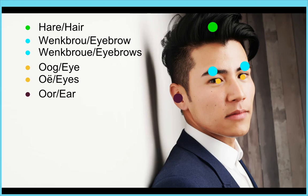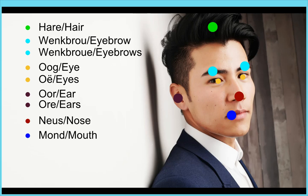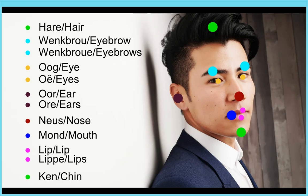And you can't see the other one, but the plural is ore - ears. Neus - nose. Mond, mond - mouth. Lip, lip - and it stays pretty much the same in English - lip, lippe - lips. Ken, ken - chin.